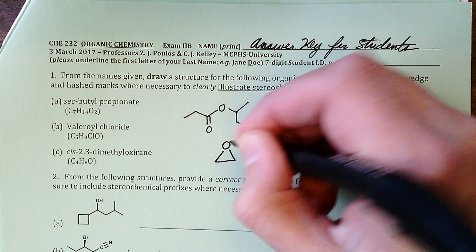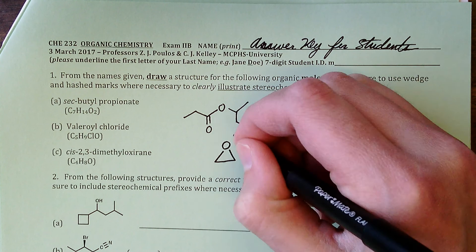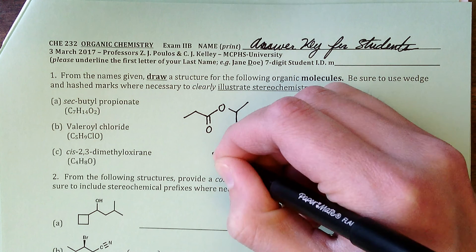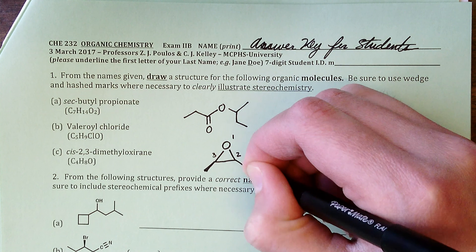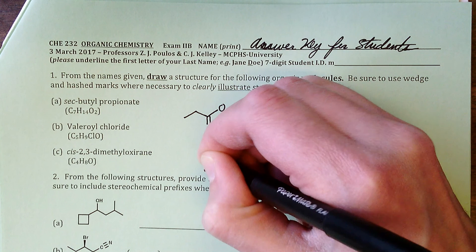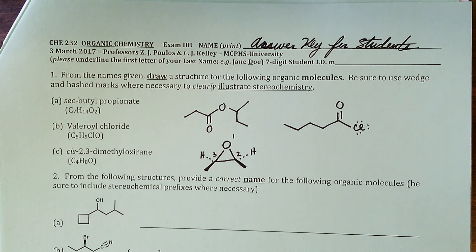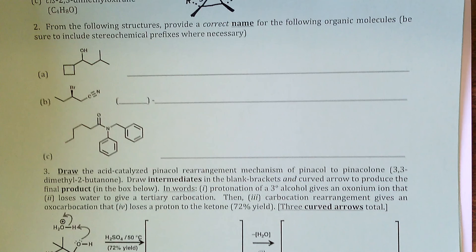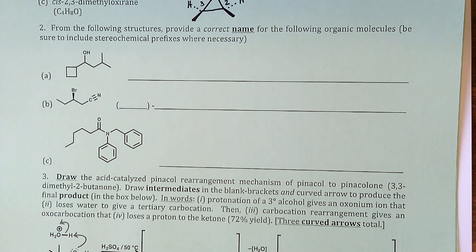Cis-2,3-dimethyloxyrene: oxyrene is our three-membered cyclic ether, also known as an epoxide. We always start numbering at the heteroatom, so carbon atoms two and three are the locations for the methyl groups, and they are cis — on the same side of the epoxide ring system.